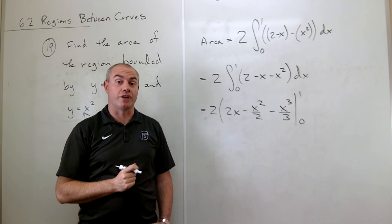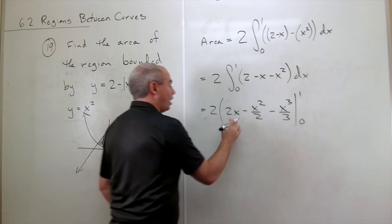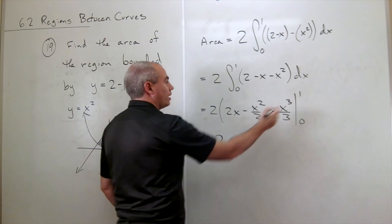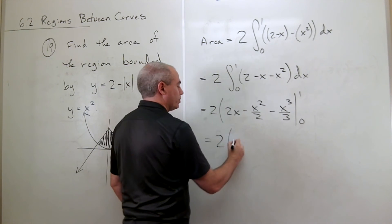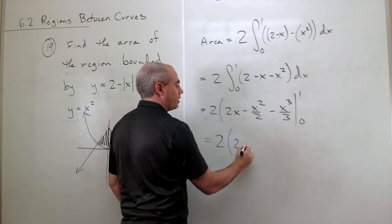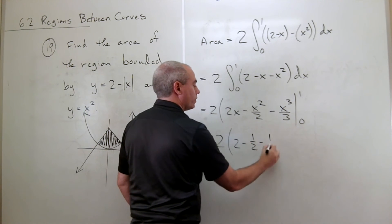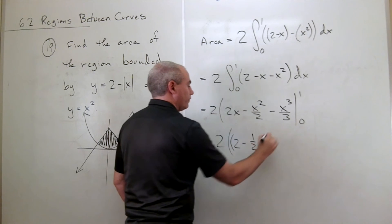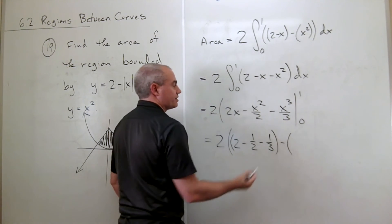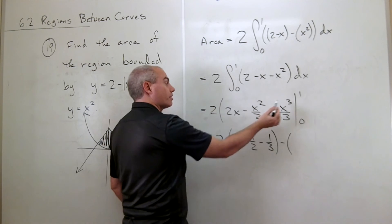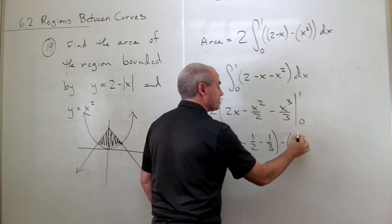We're ready to plug things in. First let's plug in the 1. If we plug in the 1, I get 2 times 1, which is 2. Plug in 1 here, I get minus 1 half. Plug in 1 here, I get minus 1 third. All of that minus plugging in 0. If I plug in 0, I get 0, minus 0, minus 0, that's 0.